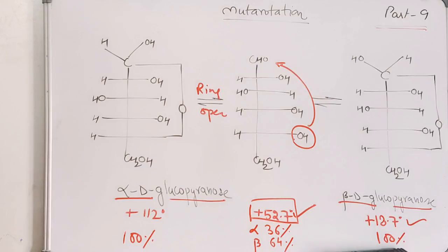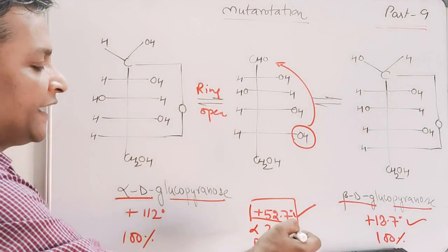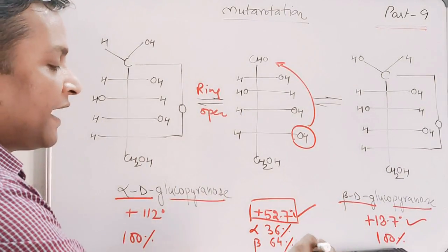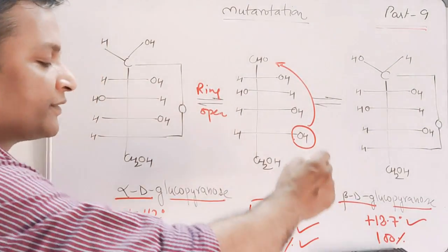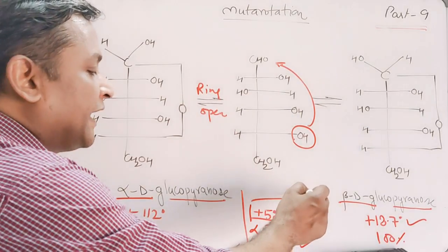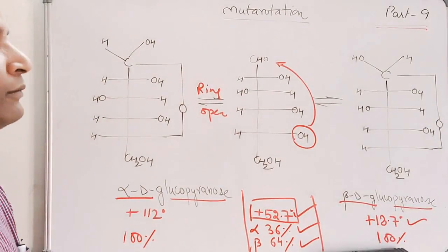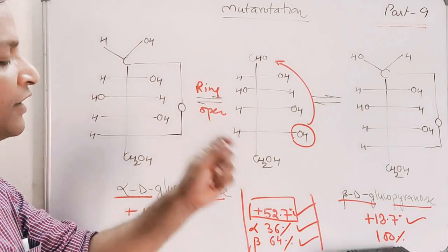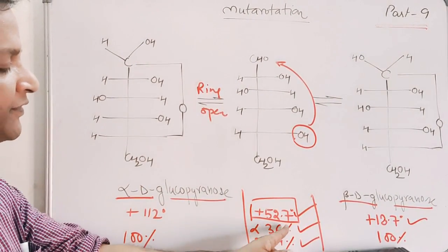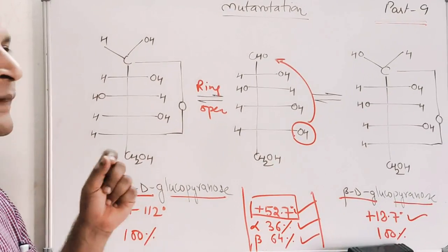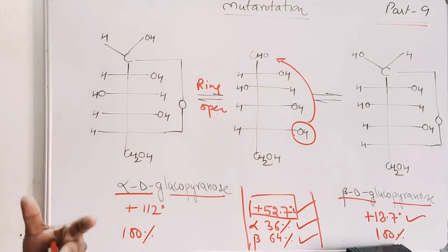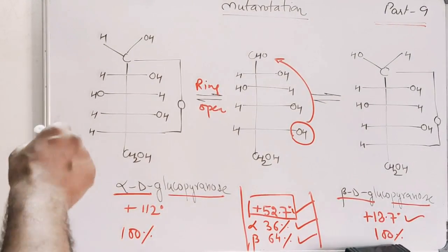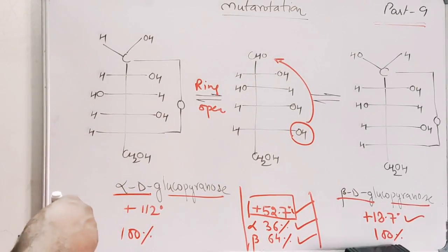One important point: mutarotation results in a constant value of 52.7° and contains a mixture of alpha and beta forms. Alpha form exists at 36% and beta form exists at 64%. So in mutarotation, an equilibrium is established where the specific rotation is 52.7°, alpha dominance is 36%, and beta form dominance is 64%. Beta form is more stable, as explained in the previous lecture.